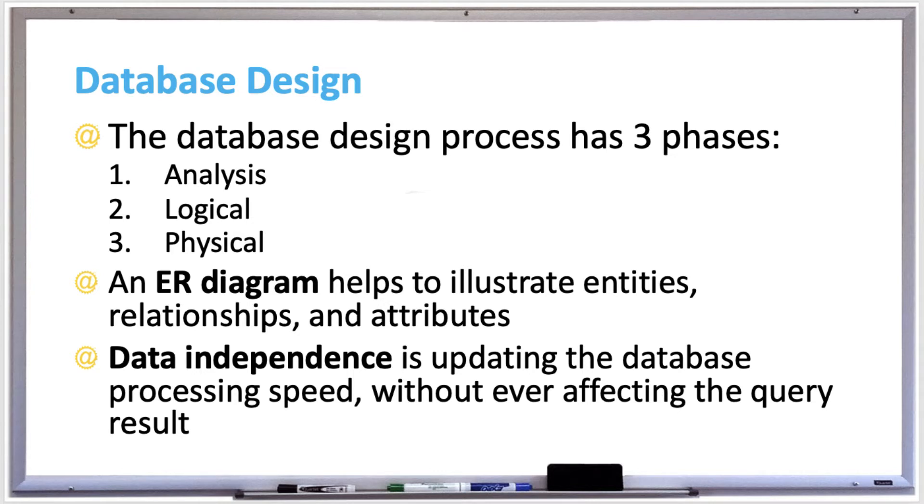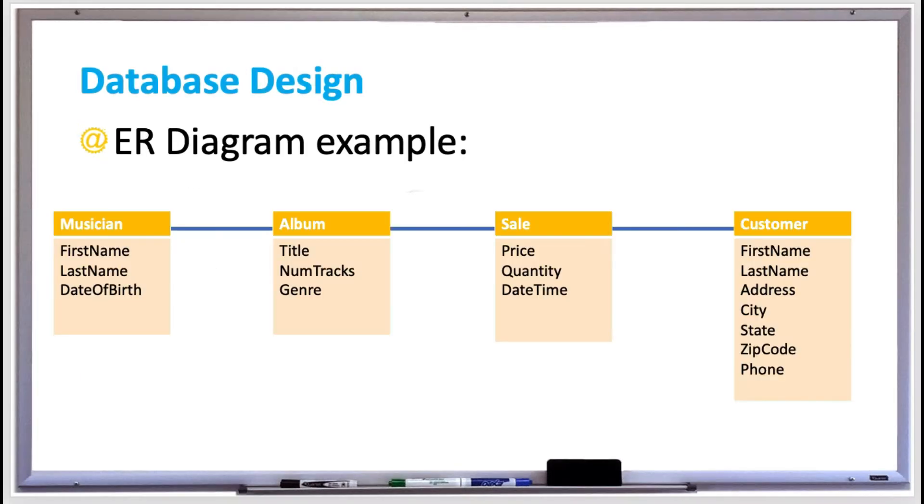An ER diagram helps to illustrate entities, relationships, and attributes. The following diagram is an example of an ER diagram. Entities are represented by rectangles with the entity name at the top. You can see we have several entities. We have musician, album, sale, and customer.